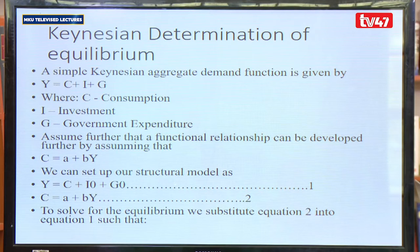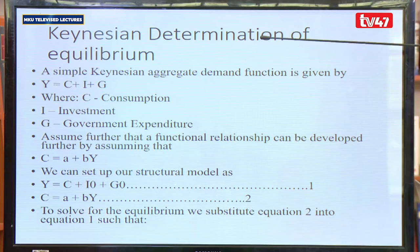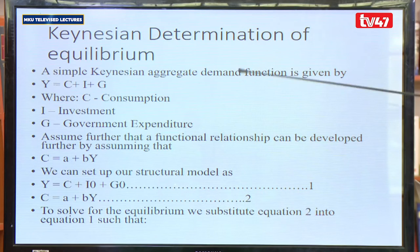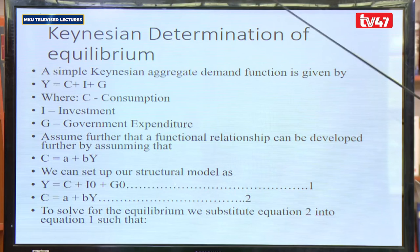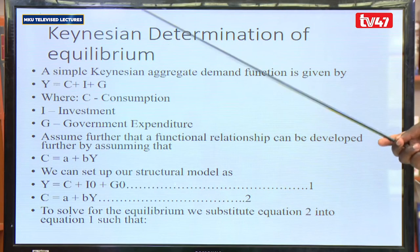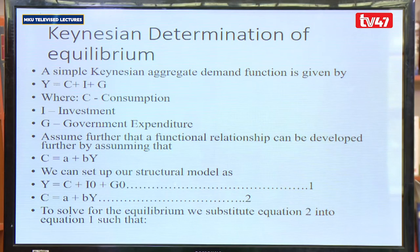We have the Keynesian determination of equilibrium. A simple Keynesian aggregate demand function is given by Y equals C plus I plus G. In this particular model, we are presenting it as a three-sector model. We can present it as a two-sector model where Y equals C plus I, or as a four-sector model where Y equals C plus I plus G plus X minus M. Here C is consumption, I is investment, and G is government expenditure.